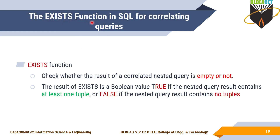Next is the EXISTS function in SQL for correlating queries. The EXISTS function is used with nested queries and it checks whether the result of a correlated nested query is empty or not. Based on that, it retrieves the result using a boolean value: true if the nested query result contains at least one tuple, false if the nested query result contains no tuples.